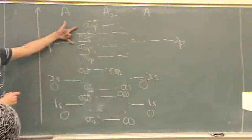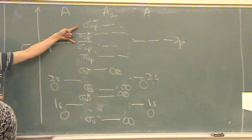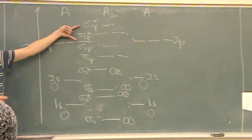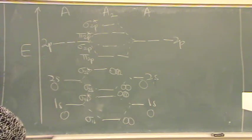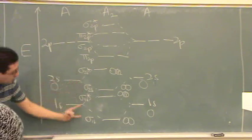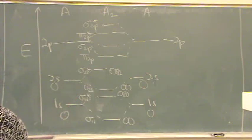And then sigma 2p star. It's like the counterparts. They're the opposites. The bonding, the anti-bonding. The bonding, the anti-bonding. Is that okay? Just like we have bonding, anti-bonding, bonding, anti-bonding.